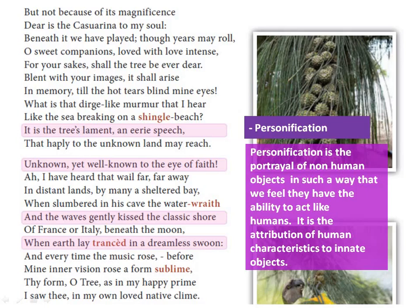In the next stanza, 'unknown yet well-known to the eye of faith' uses personification, since the eye is the organ of sight or vision attributed here to faith. The line 'the waves gently kissed the classic shore' — kissing the shore — is also personification. The line 'the earth lay tranced in a dreamless swoon' is again personification. Here the speaker envisions nature — that is, the tree, waves, and earth — as living and perhaps conscious entities recalling links to the past. 'Tranced' means in a half-conscious state.